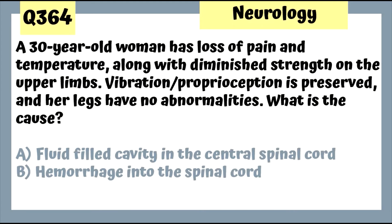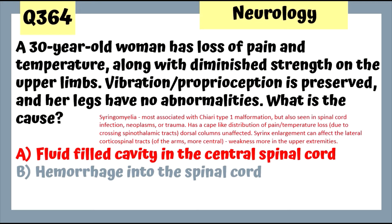Question 364: A 30-year-old woman with loss of pain and temperature and diminished strength in the upper limbs, but preserved vibration and proprioception, with no abnormalities in the legs — this is syringomyelia, a fluid-filled cavity in the central spinal cord, with its characteristic distribution.